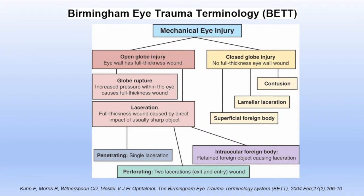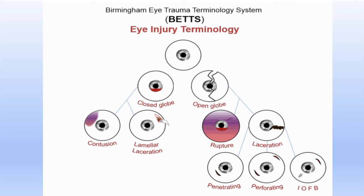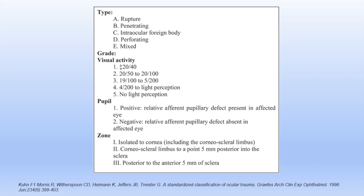This is the Birmingham Eye Trauma Terminology (BETT), given to clearly understand the mode of injury. We have an open globe injury and a closed globe injury; today we are restricting ourselves to open globe injury. When there is increased pressure within the eye and the eye wall gives way, it is called globe rupture. When there is a full thickness wound by direct injury from a sharp object, it is called laceration — it can be penetrating when only an entry wound is present, perforating when both entry and exit wounds are present, and intraocular foreign body when there is a retained foreign body.